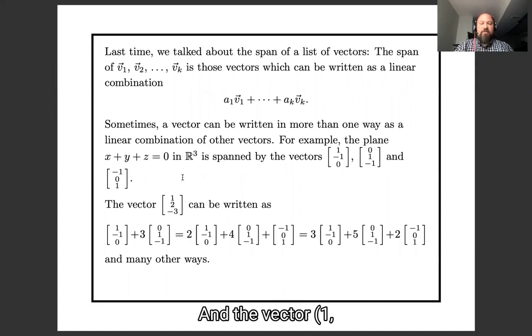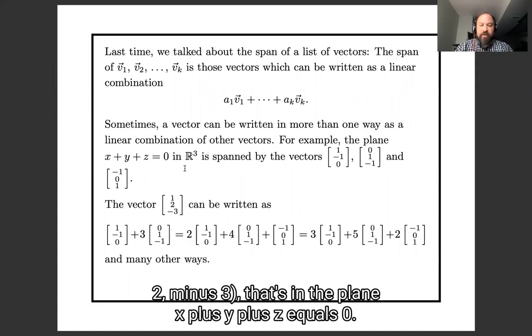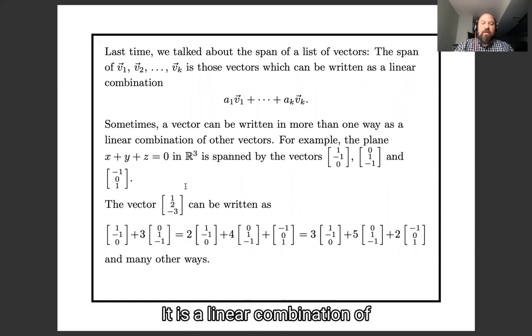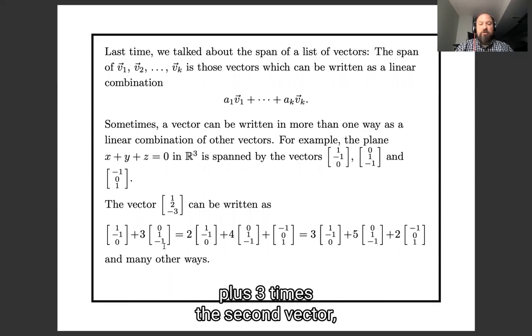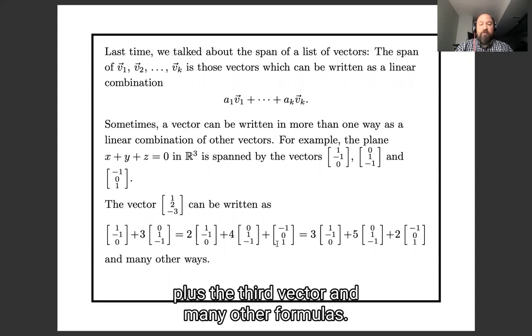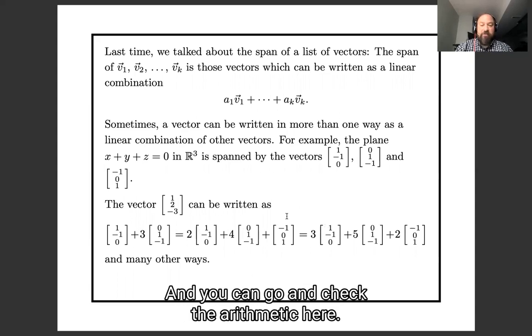And the vector (1, 2, -3), that's in the plane x plus y plus z equals zero, it is a linear combination of these vectors, and in many different ways. So it's the first vector plus 3 times the second vector, but it's also 2 times the first vector plus 4 times the second vector plus the third vector and many other formulas, and you can go and check the arithmetic here.